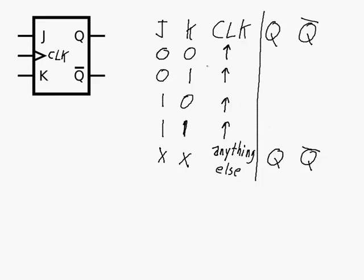Let's look at the four possible combinations on a rising edge. When J and K are both 0, this is the latch state — nothing changes, Q stays at Q, Q-bar stays at Q-bar. If J is 0 and K is 1, this is the reset: Q goes to 0 and Q-bar goes to 1. If J is 1 and K is 0, this is the set: Q goes to 1 and Q-bar goes to 0.